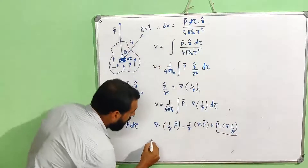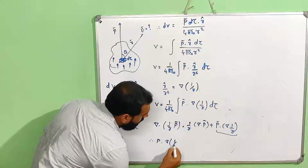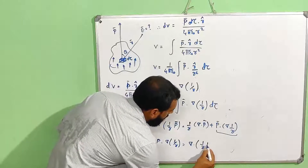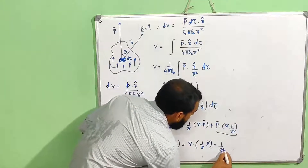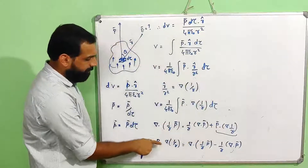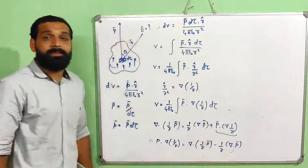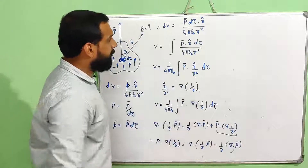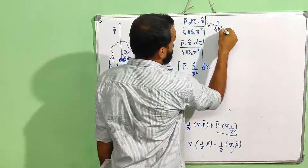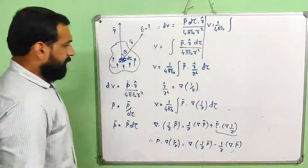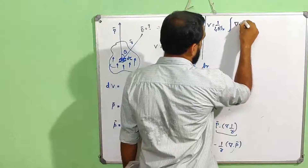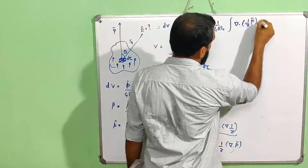Using the product rule, del dot (1/r into P) equals (1/r) del dot P plus P dot del of (1/r). Rearranging, P dot del of (1/r) equals del dot (1/r into P) minus (1/r) del dot P. We substitute this into the potential integral: V equals 1 by 4 pi epsilon 0 integral.